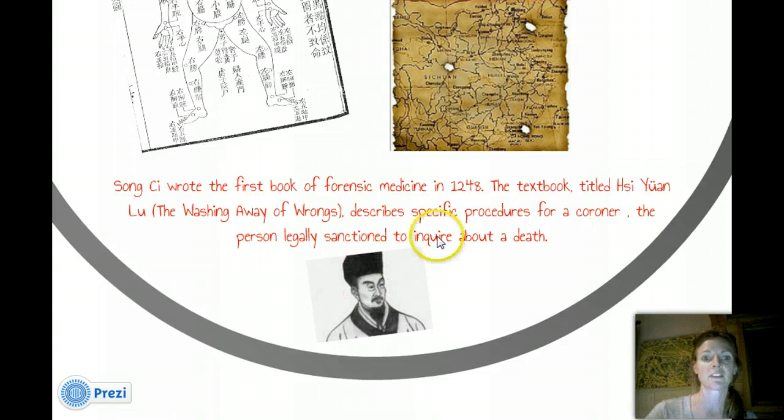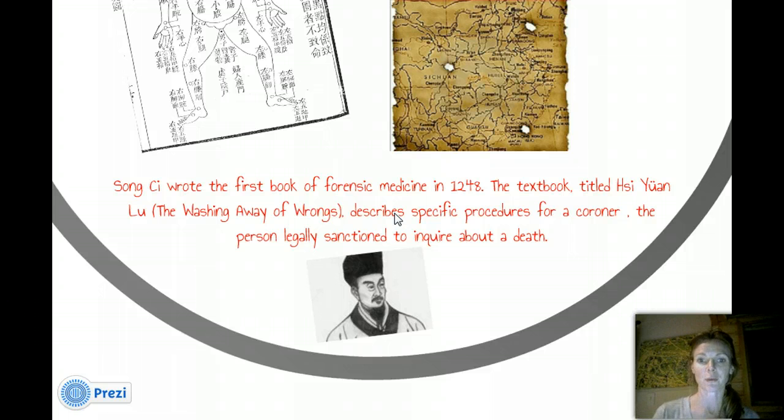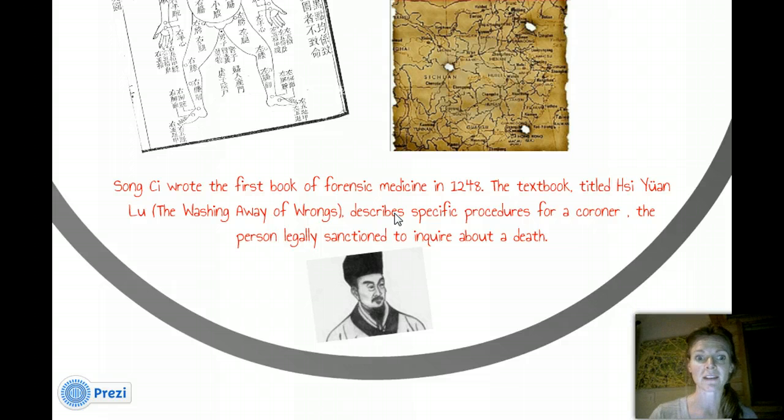So, it describes specific procedures for a coroner, which is the person who is legally sanctioned to inquire about a death. So, procedures for a coroner, which we'll get into more specifically what coroners do, but how to examine a body, almost kind of like in an autopsy type setting. So, this is back in 1248 that this book was written.